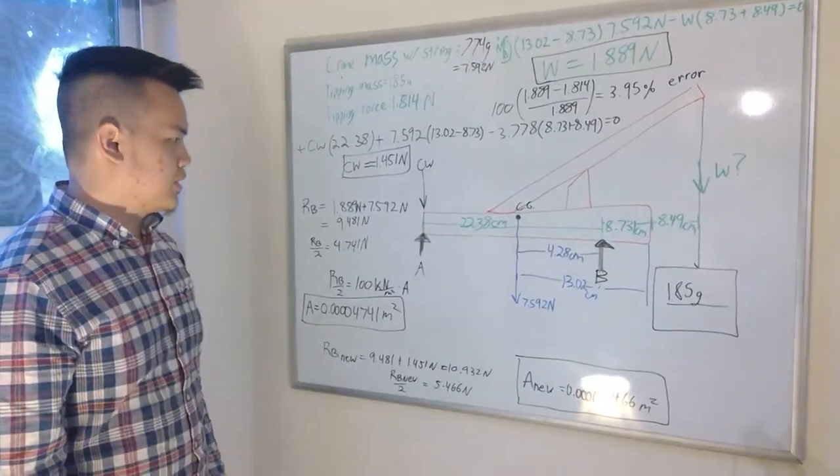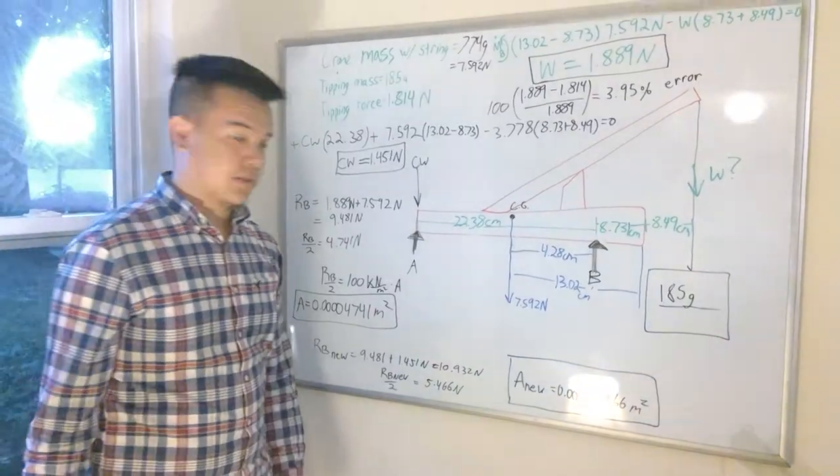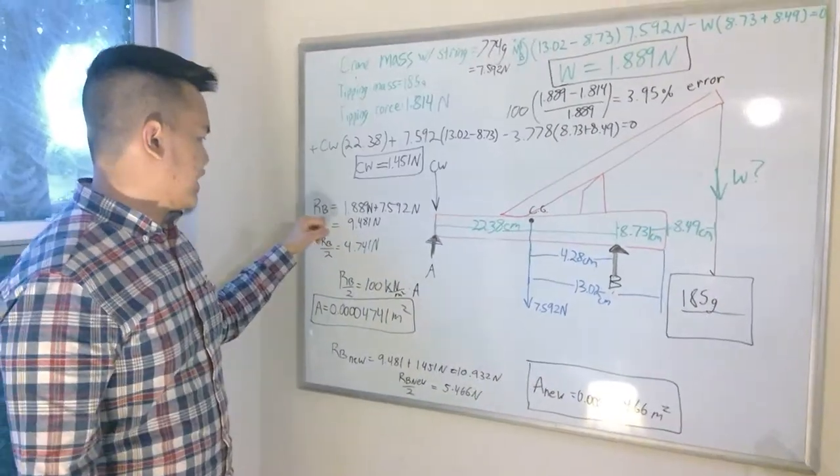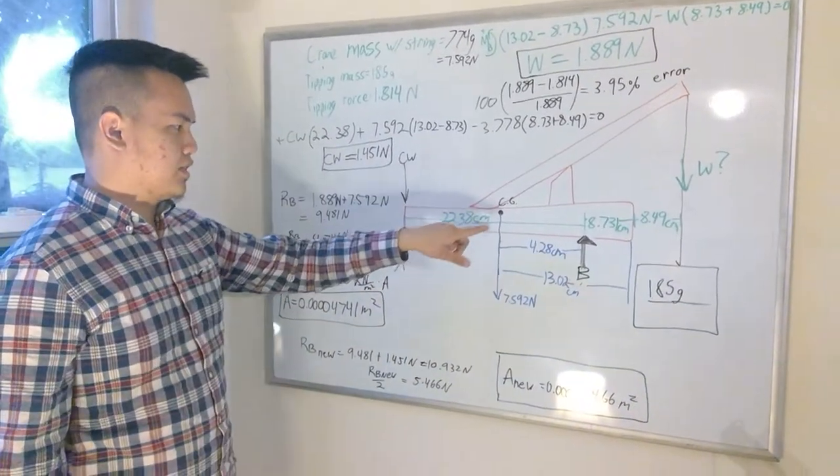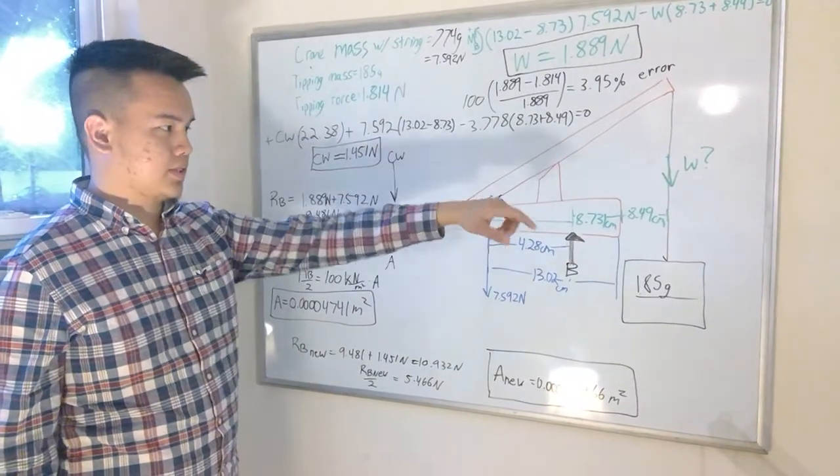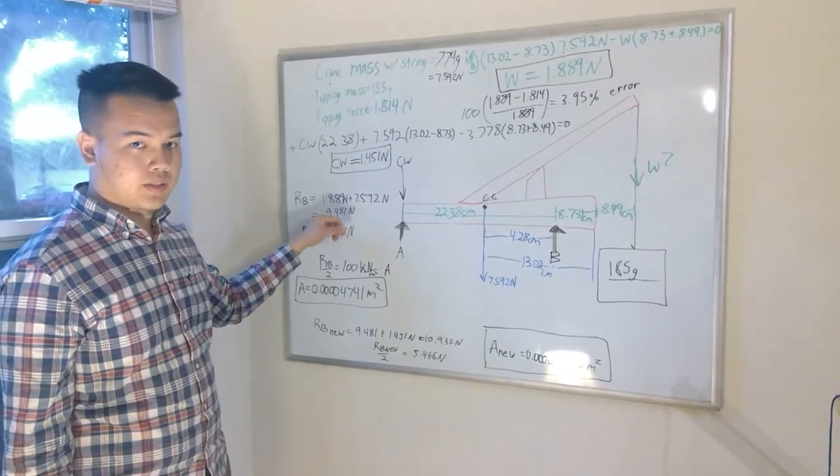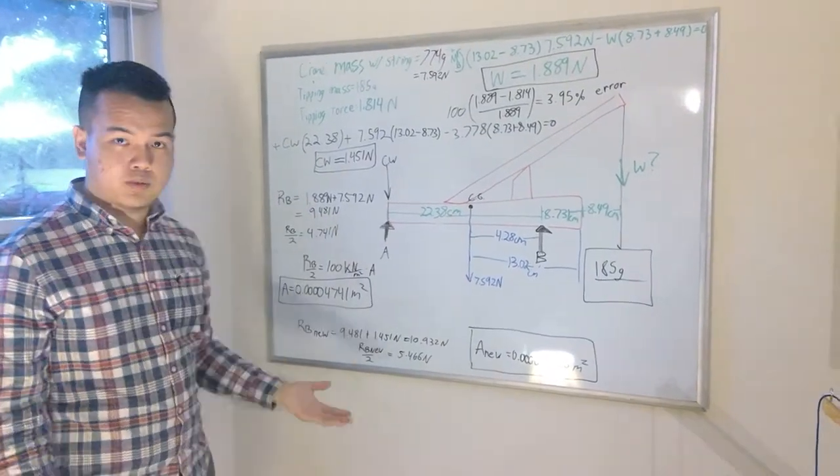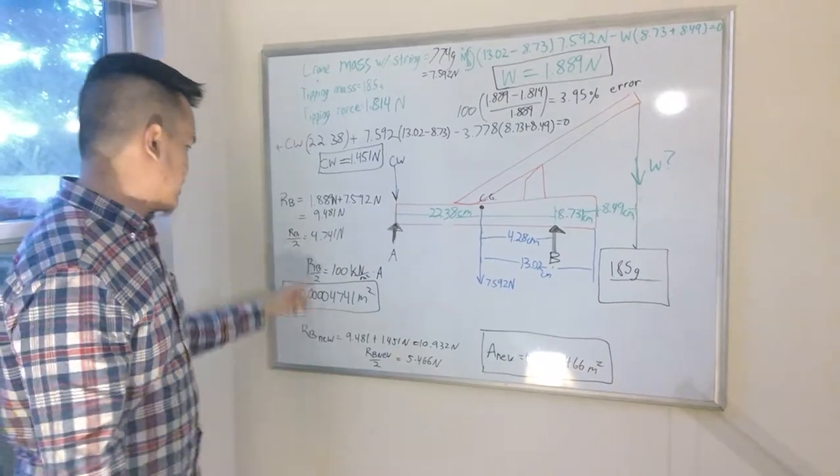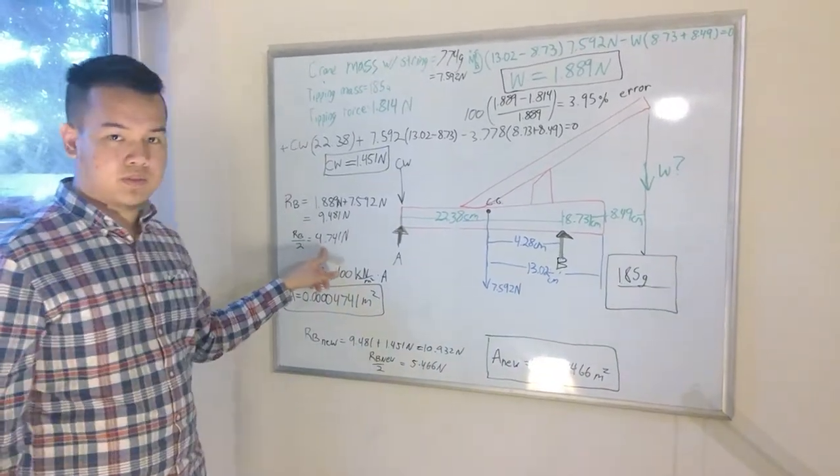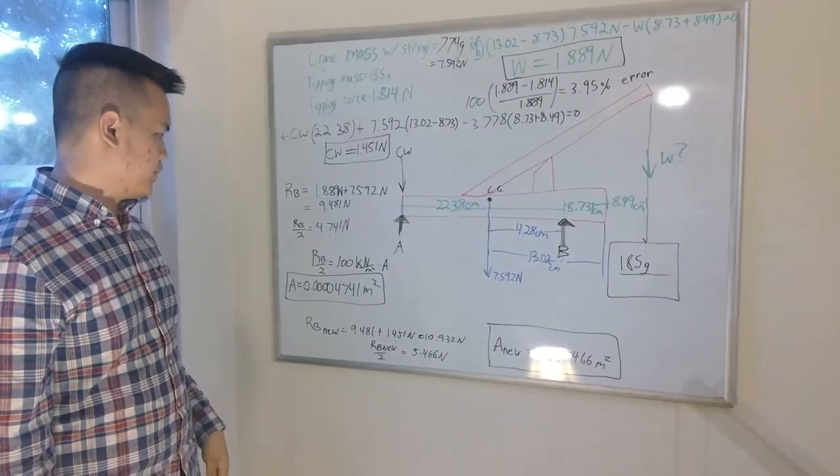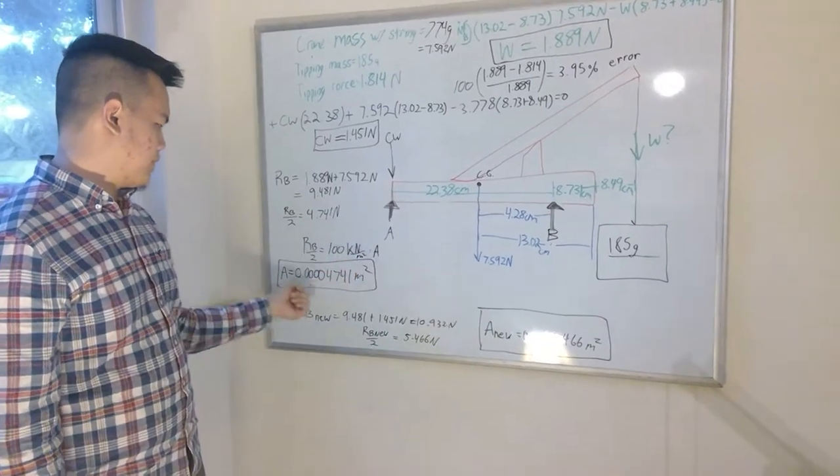Moving on to finding the area of the plate. The reaction at b is just the center of gravity plus the tipping weight, which gets you 9.481 newtons, and then divided by two because it's symmetric, which got 4.74 newtons. Then solving for the area, this is the area of the plate that it should be.